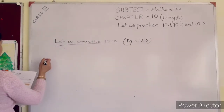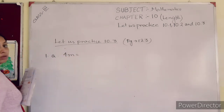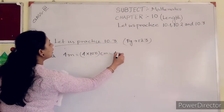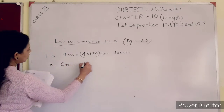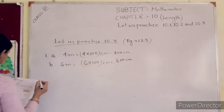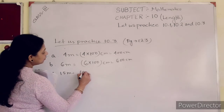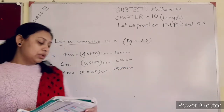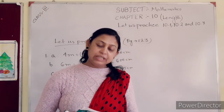Now question number 1: convert the following into centimeter. 1A: 4 meter = 4 × 100 = 400 centimeter. Number B: 6 meter = 6 × 100 = 600 centimeter. Number C: 15 meter = 15 × 100 = 1500 centimeter. I have done questions 1A, B, and C — you will try D and E yourself.